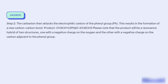Step 2. The carbanion then attacks the electrophilic carbon of the phenyl group Ph. This results in the formation of a new carbon-carbon bond. Product: CH3CH=C(PhO)–CH2CH3. Please note that the product will be a resonance hybrid of two structures — one with a negative charge on the oxygen and the other with a negative charge on the carbon adjacent to the phenyl group.